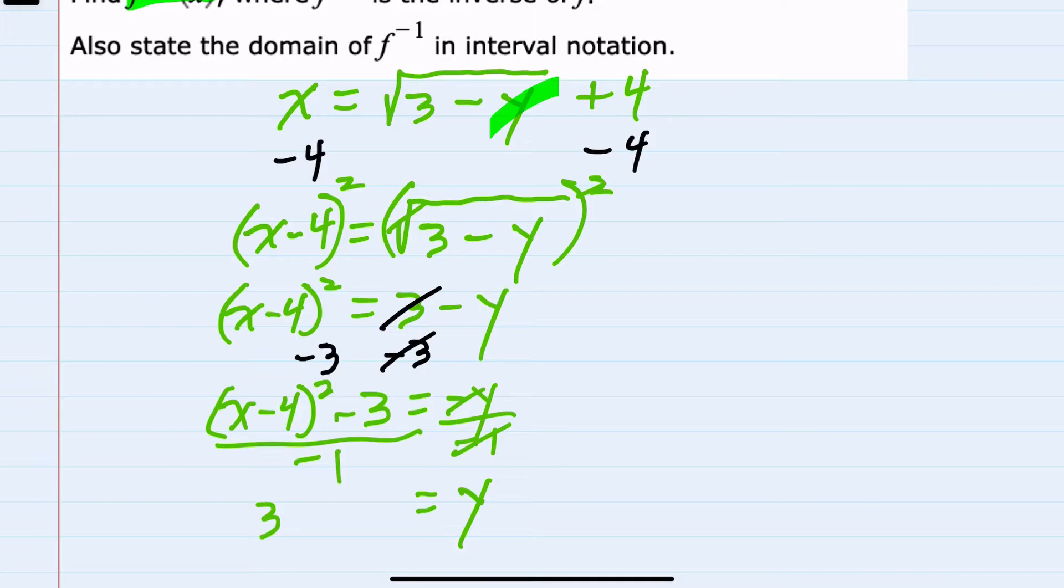So I'm just going to write this as a positive 3 minus x minus 4 squared. We have solved for y after switching the x's and y's. So our f inverse function will be 3 minus x minus 4 squared.